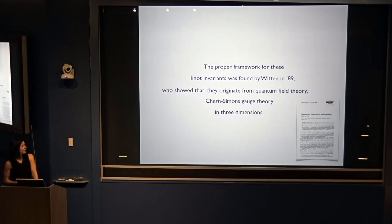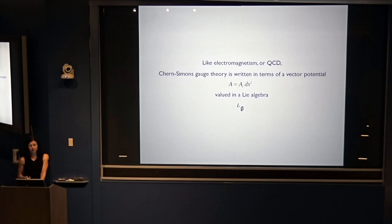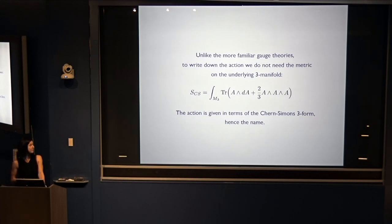The proper framework for these knot invariants was found by Witten in 1989. He showed that they originate from quantum field theory — Chern-Simons theory. Like electromagnetism and QCD, Chern-Simons gauge theory is written in terms of a vector potential valued in a Lie algebra G. But unlike the more familiar gauge theories, to write down the action you do not need the metric on the underlying 3-manifold. The action is given in terms of the Chern-Simons 3-form, hence the name.